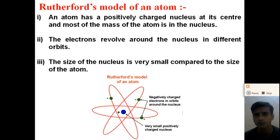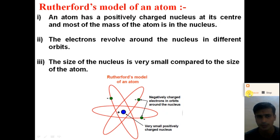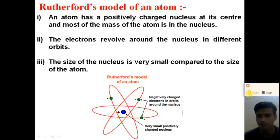To summarize Rutherford's model of an atom: all the positively charged particles and most of the mass of the atom are concentrated in a very small region at the center called the nucleus. Electrons in the atom revolve around the nucleus in different circular orbits. The size of the nucleus is about 10 raised to minus 14 meters, very small compared to the size of the atom.